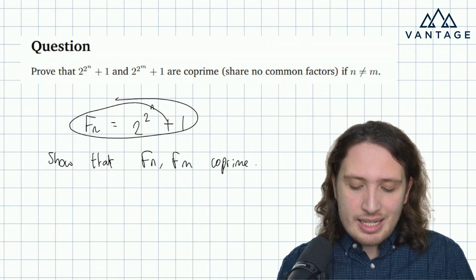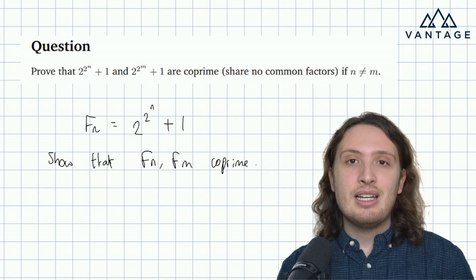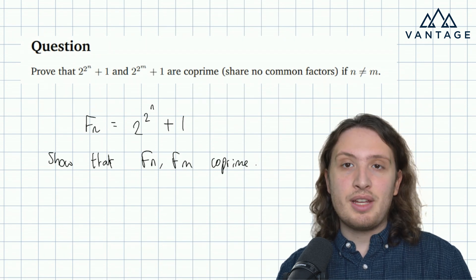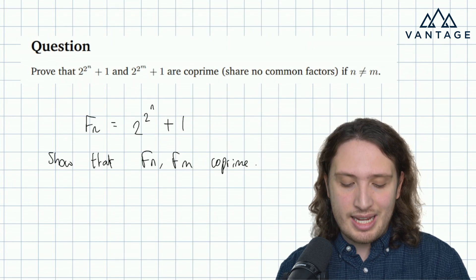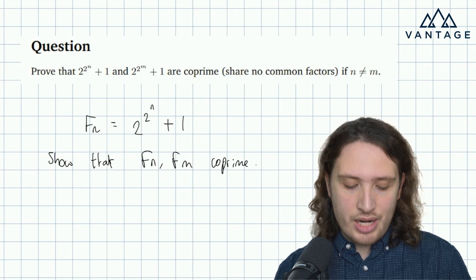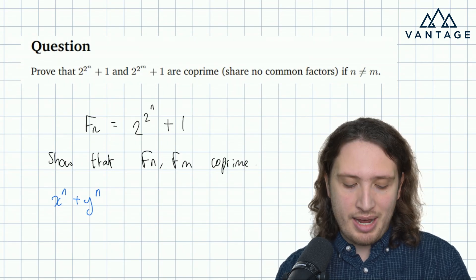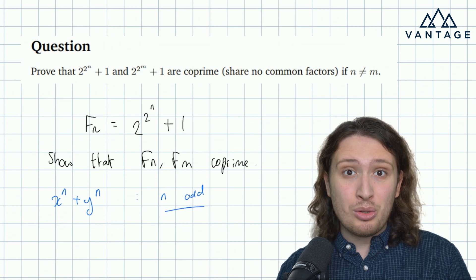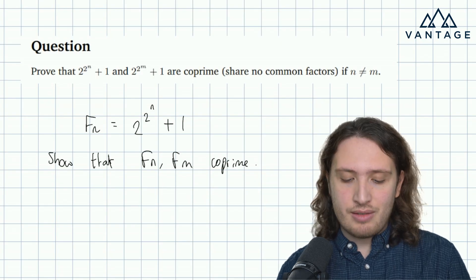Maybe factorising this expression could be quite nice, especially since we have a statement to prove about factors — and especially if we could factorise it in a way that got other f's involved. There's not really anything hugely obvious to do. Where it's a plus, there is a generalised sum of powers factorisation, but it only works if the power is odd. This power, being a pure power of two, certainly is not odd. So as it stands, there's nothing really we can do factorisation-wise.